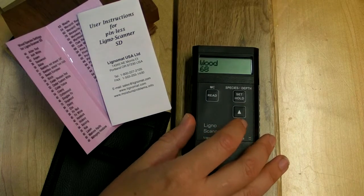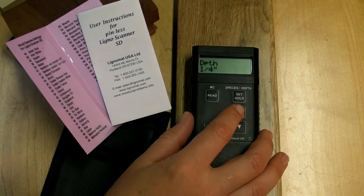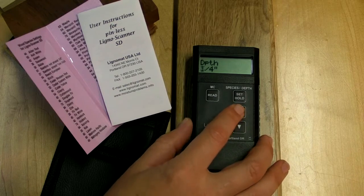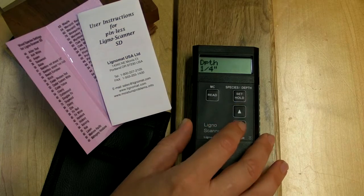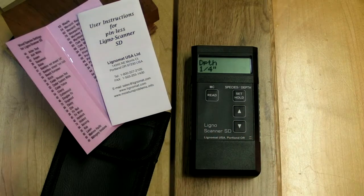To check the depth setting, press the key again and change depth settings from 1 quarter of an inch to 3 quarter of an inch by using the up or down arrow keys. We will be using 1 quarter inch setting for this video.